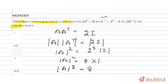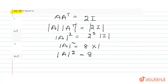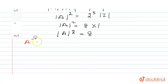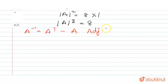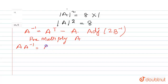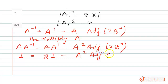Further, we have the equation A inverse equals A transpose. I will use this equation. So the full equation is: A inverse equals A transpose minus A into adjoint of 2B inverse. I will pre-multiply the whole equation with A. So A into A inverse equals A into A transpose minus A squared into adjoint of 2B inverse. Since A into A inverse equals I, and A into A transpose equals 2I, we get: I equals 2I minus A squared into adjoint of 2B inverse.